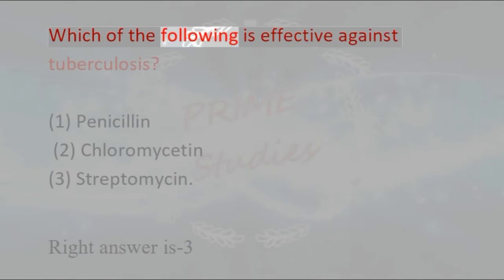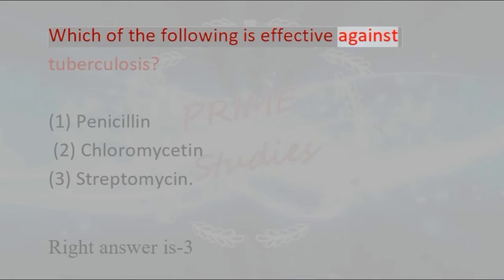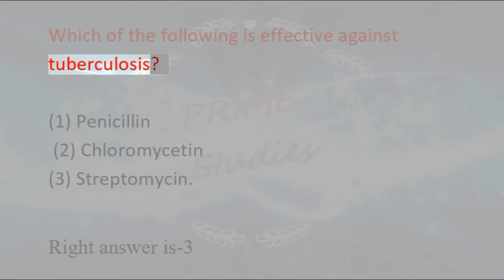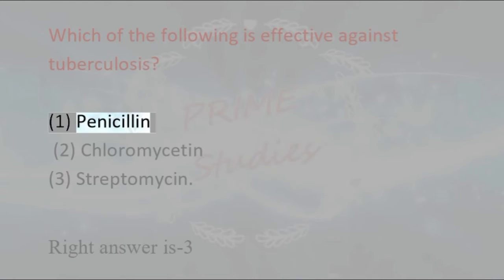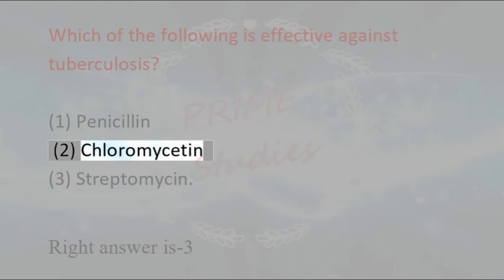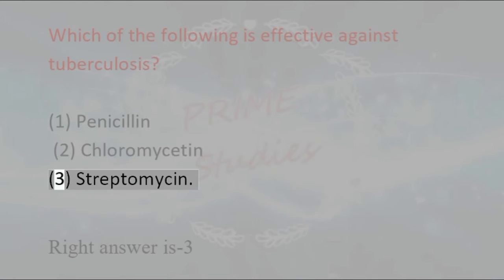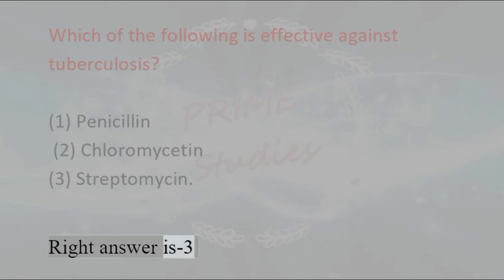Which of the following is effective against tuberculosis? 1. Penicillin, 2. Chloromycetin, 3. Streptomycin. Right answer is 3 — Streptomycin.